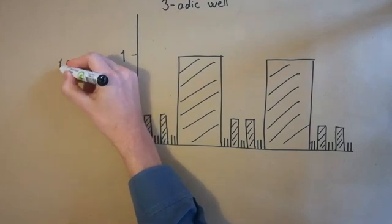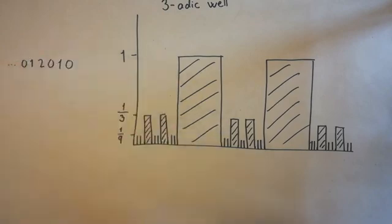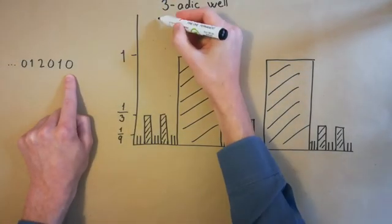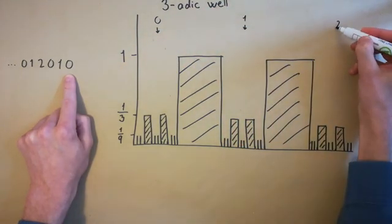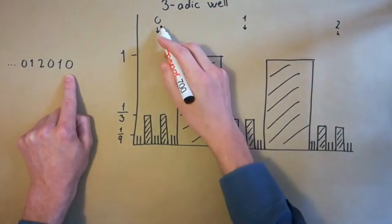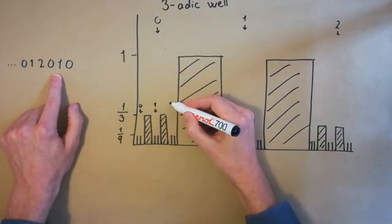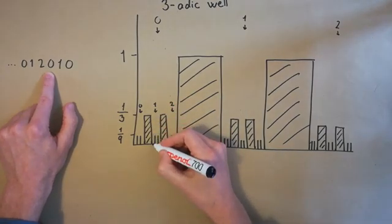But how do we get from a p-adic number to its position on this weird number line? You number the wells 0 to 2, and put the number into the well corresponding to its first digit. For the smaller wells, again number them 0 to 2, and put the number into the well corresponding to the next digit, keeping it up for all the digits of the number. In this case, we'll end up somewhere right around here.